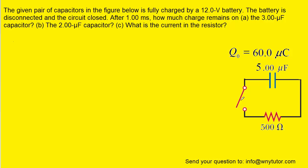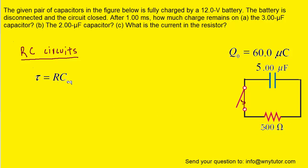What happens next is the switch is closed, forming a completed RC circuit — called an RC circuit because it has a resistor and a capacitor. For an RC circuit there is a value called the time constant, which equals the resistance in the circuit times the capacitance. We have both values from the picture, so we can easily calculate the time constant.